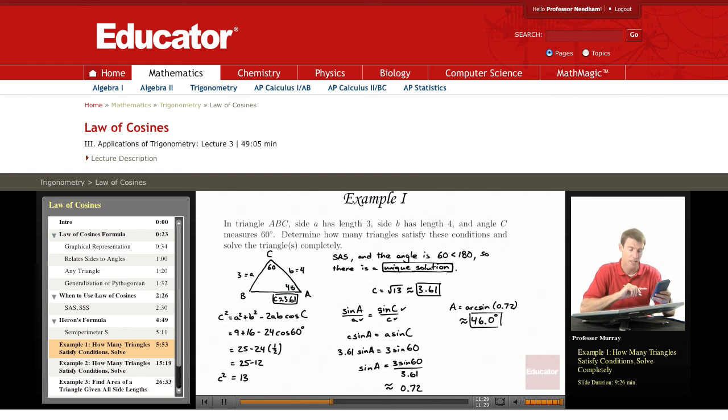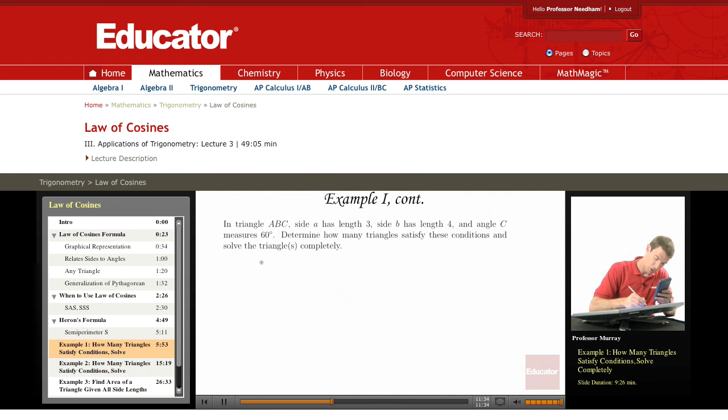So now I've got a measure for angle A. I'm going to use the law of sines to find a measure for angle B, but I need a little more space. So let me redraw my triangle. We've got A, B, and C. A, B, and C. And I figured out that C was 3.61. A was given as 3. B was given as 4. C was given as 60. And I figured out that A was 46 degrees.